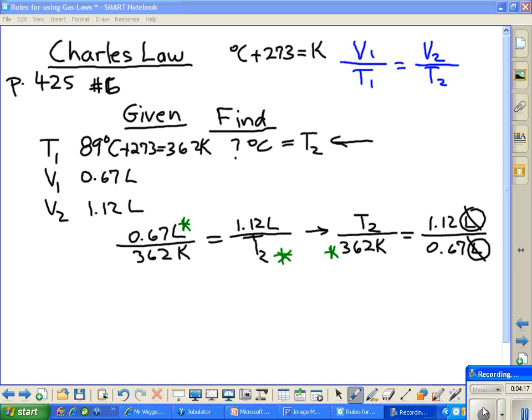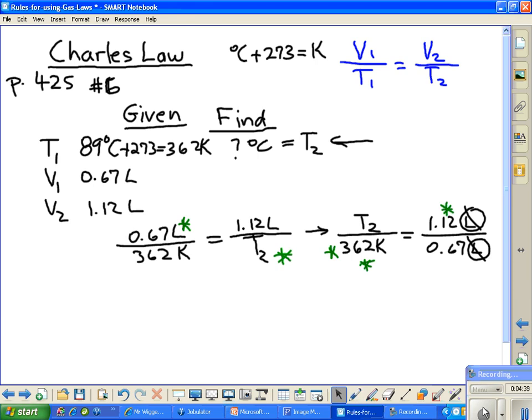We take and we divide 1.12, the volume, by the other volume, which is 0.67. And then without hitting the equal key on your calculator, you will times the 362 because we're going to cross multiply between this 362 and the 1.12. And that will then give us our final answer.